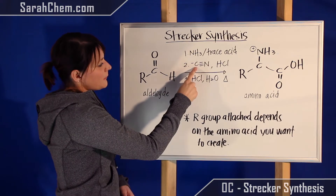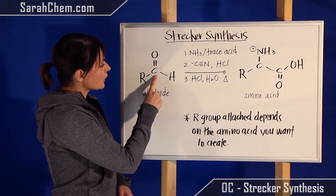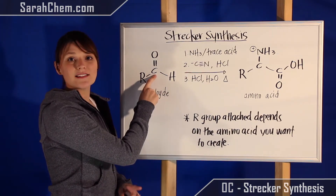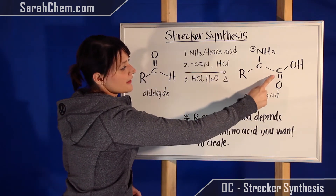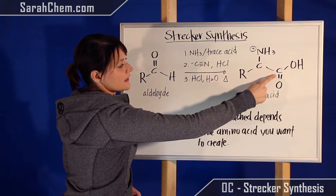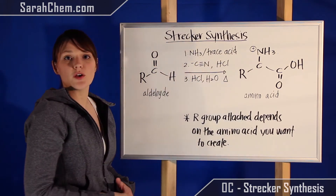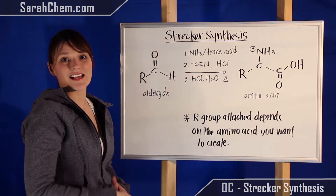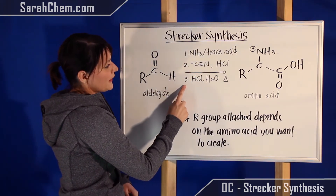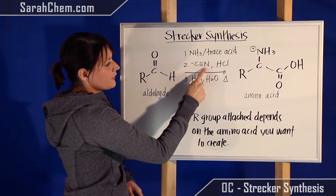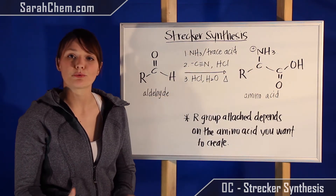The second step is there to add the additional carbon. If you take a look I only have one C listed in the aldehyde but over here in our amino acid there are two C's. This second C is derived from this carbon in the cyanide. The very last step is going to be to basically get rid of that nitrogen and create the carboxylic acid group.